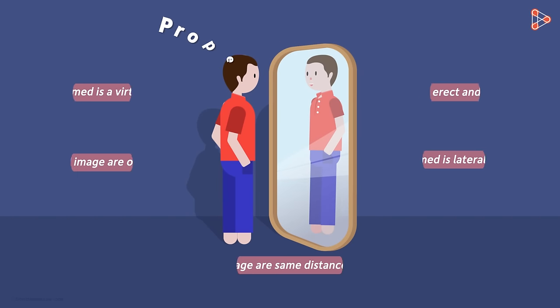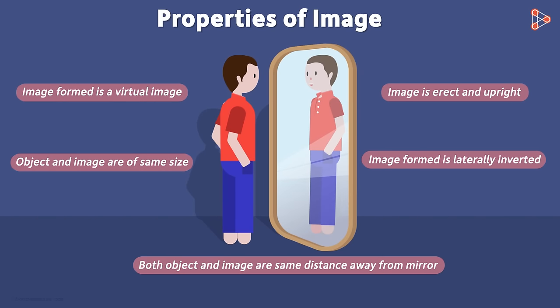Till now, we have been looking at the properties of images formed by plane mirrors. A plane mirror is a mirror whose reflecting surface is flat.